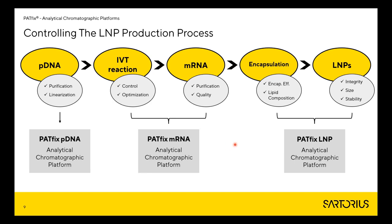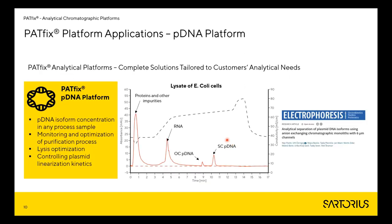Before we go to the newly developed platform, I want to say a few words about our already existing platforms. The pDNA platform can be used for different purposes: we can determine the concentration of individual pDNA isoforms in any process sample, monitor and optimize the purification process, optimize the lysis of E. coli cells, or control plasmid linearization kinetics.